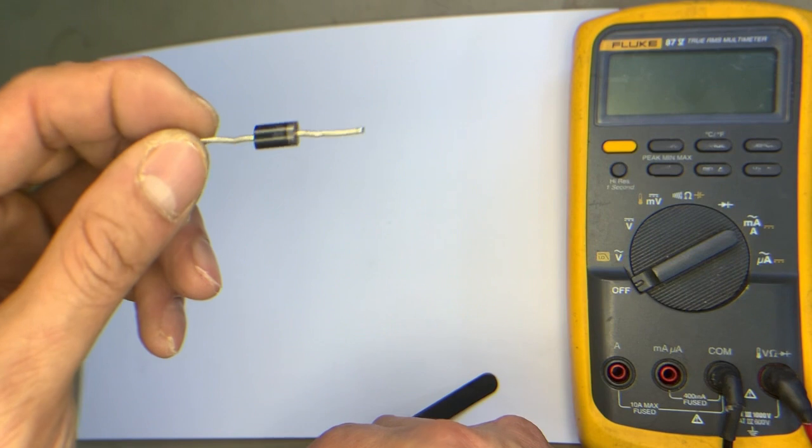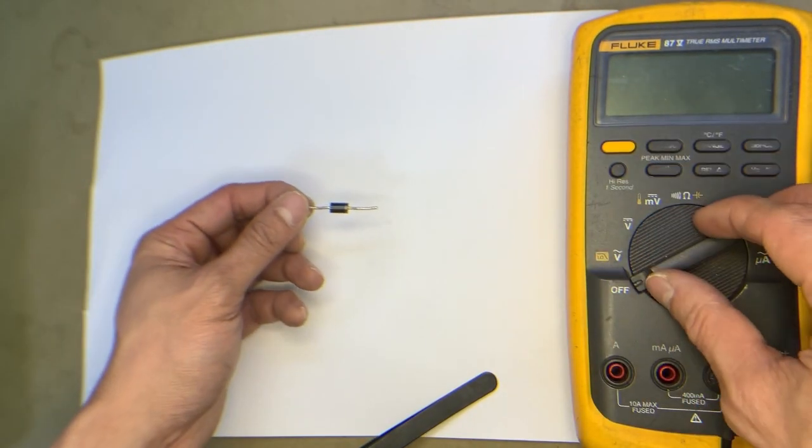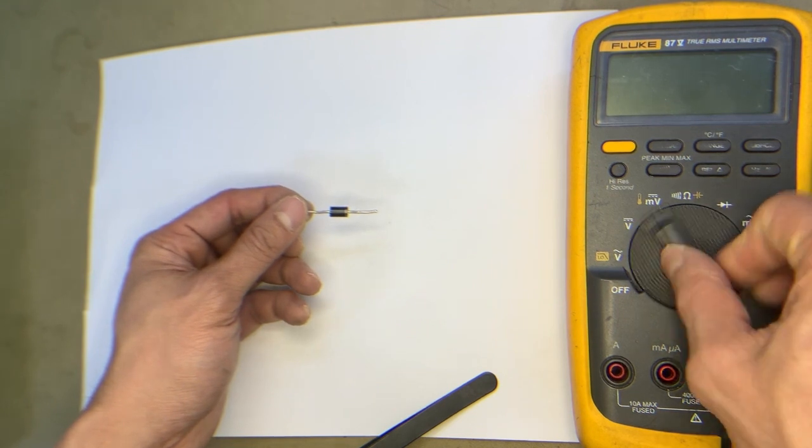Next, identifying using the digital tester. Let's calibrate to the diode test mode.